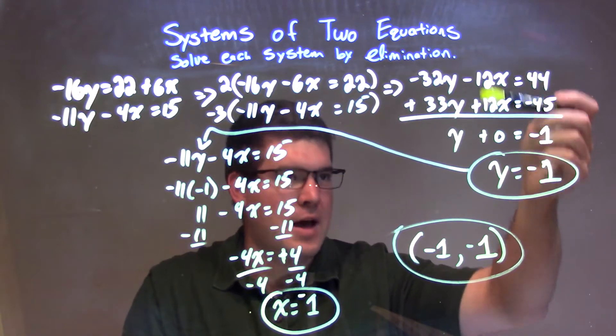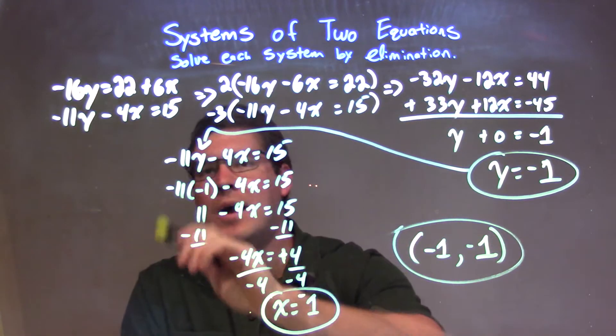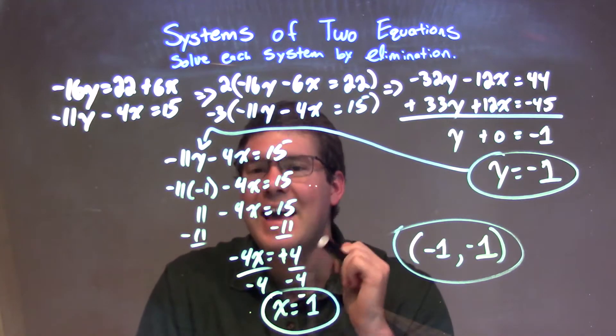When I added the two equations, x got eliminated, giving me y equals a negative 1. From there, I plugged negative 1 in for y into my second equation. It could have been either one. I chose my second equation. And then I simplified.